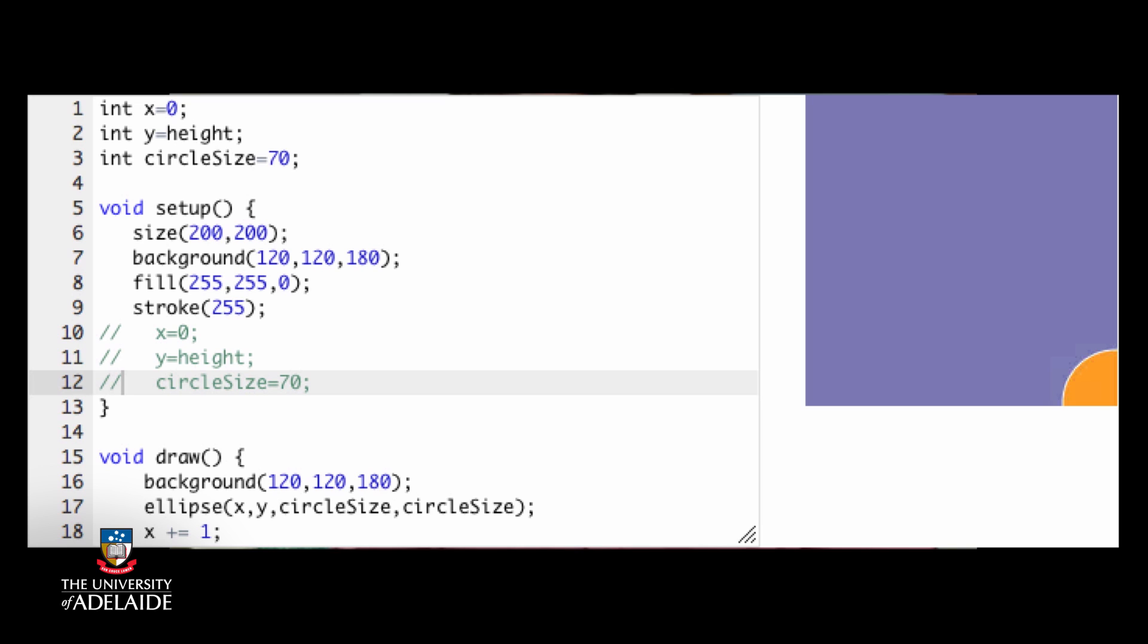When processing starts, the default canvas size is 100 by 100, until we change that value in the setup function with the size function. That's what height and width will both be. Global variables are not guaranteed to know what has happened in setup.